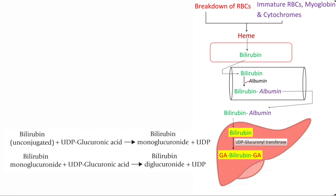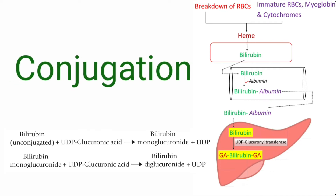Some amount, around 15%, of conjugated bilirubin is bilirubin monoglucuronide — bilirubin with one glucuronic acid. This addition of glucuronic acid to bilirubin is known as conjugation.